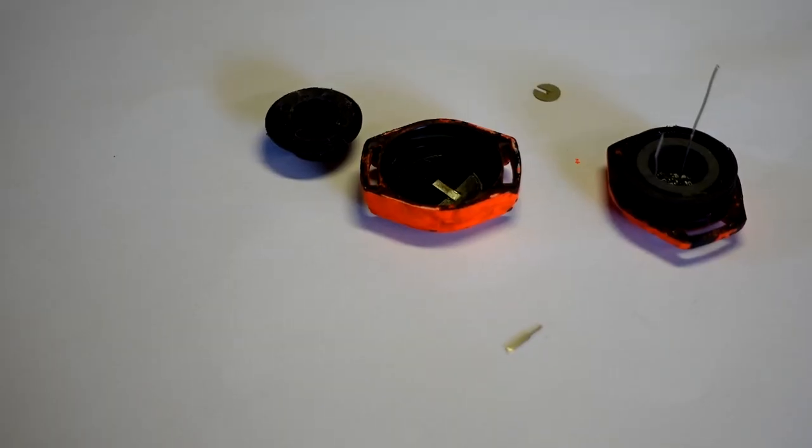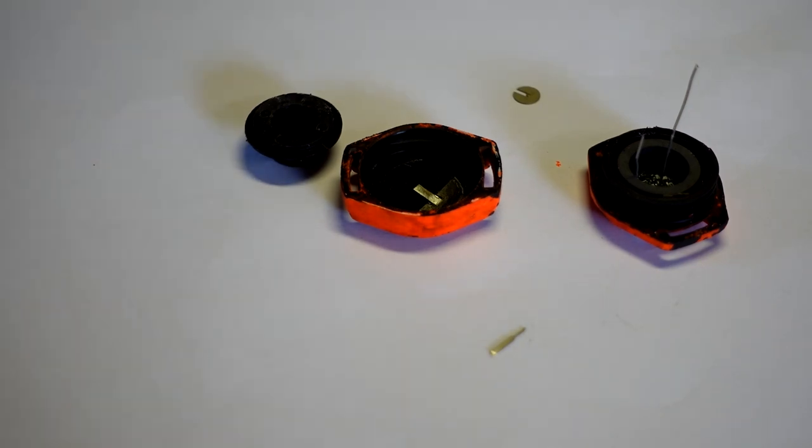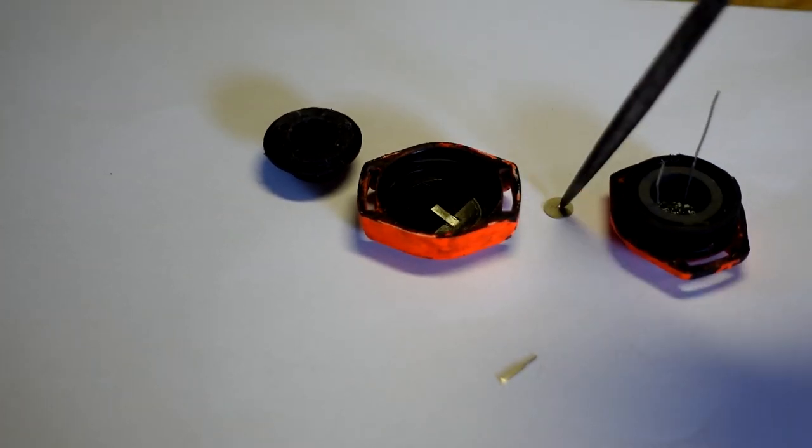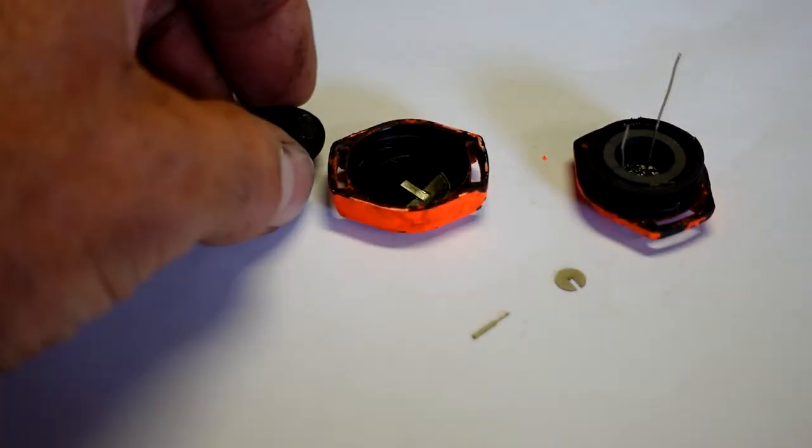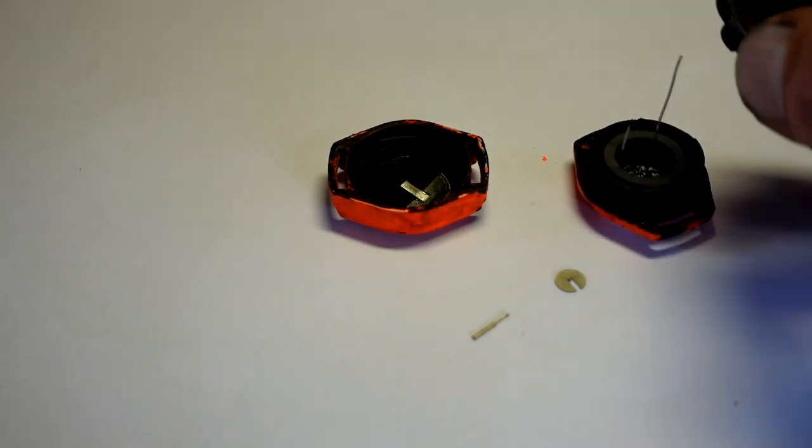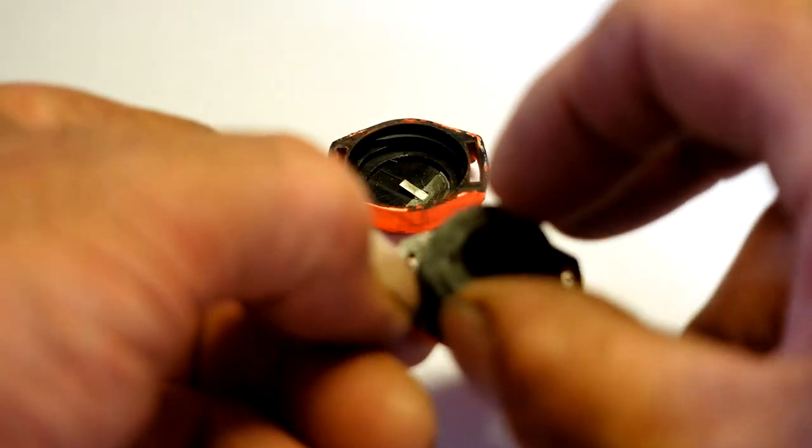Here I have a dead ferret finder transmitter which came to me in pieces more or less as it is now. It seems to have been broken apart. That component there sits in the bottom of this top hat and is the negative battery connector, I think. That top hat sits inside the transmitter.